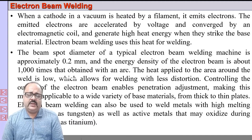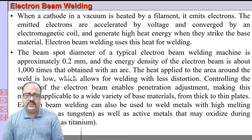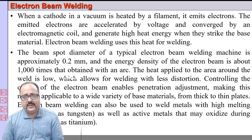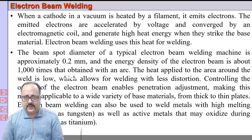The entire process is carried out in a vacuum chamber so that the path of the electrons is not disturbed, and secondly, the quality of the weld is very good because we are not using any fluxes or shielding gases. To prevent contamination of the tungsten filament as well as the workpiece, this type of welding is carried out in a vacuum. There is a cathode which is basically a tungsten filament, and the entire process is done in vacuum.